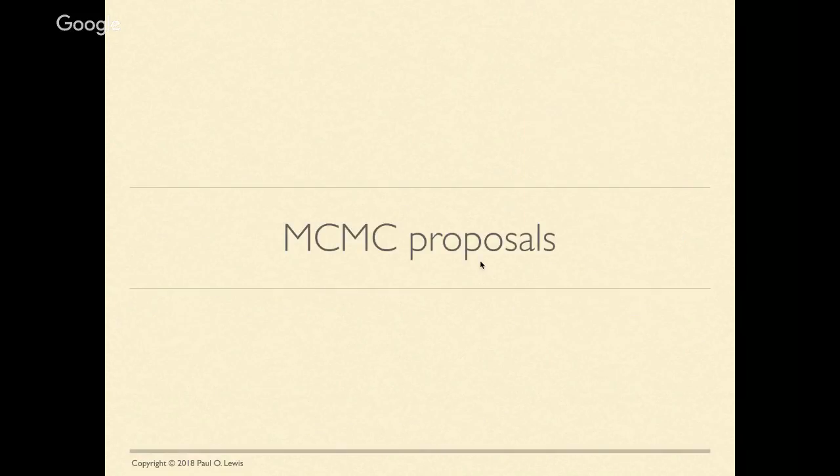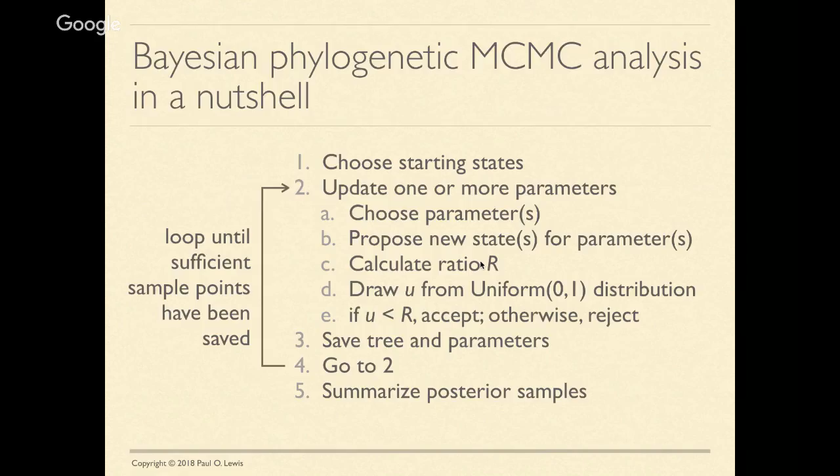Let's talk about MCMC proposals. In the last part 3A, I talked about this metaphor of a robot walking around on a landscape given some simple rules. With those simple rules, the robot tends to spend more time in the highest parts and less time in the lowest parts, walking around in proportion to the volume underneath that curve at each point. This part is about how the robot chooses to take the next step and how it decides where to go in the space represented by a phylogenetic analysis.